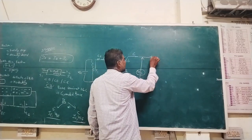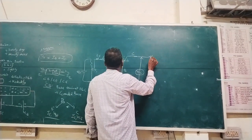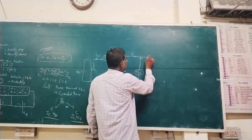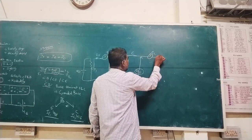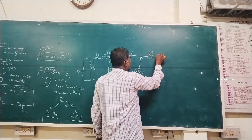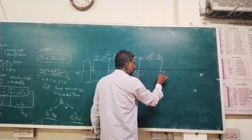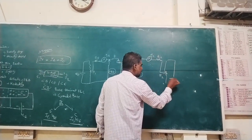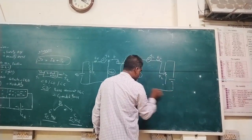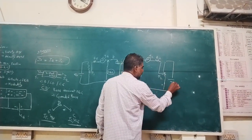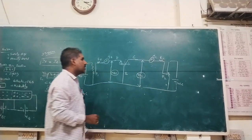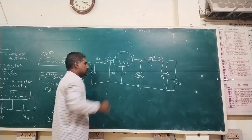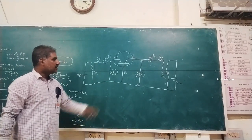Emitter current IE flows and is collected as IC at the collector terminal. Collector current is limited by resistor RC, a potentiometer P2 is used, and supply voltage VCC is applied. This is the basic circuit for common base configuration with the base terminal grounded.